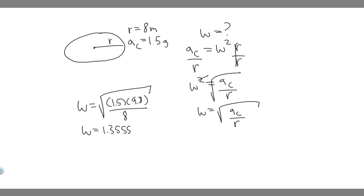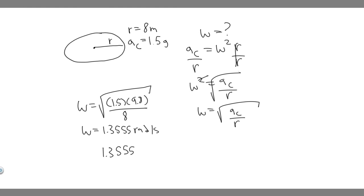Keep in mind this result is in radians per second, which is the angular velocity. But what we want is revolutions per minute. So we need to convert from radians per second into revolutions per minute. First, multiply by 60 seconds per minute to cancel out the seconds, giving us radians per minute.